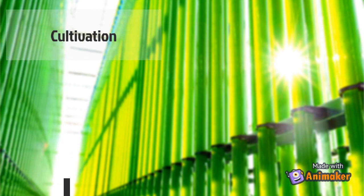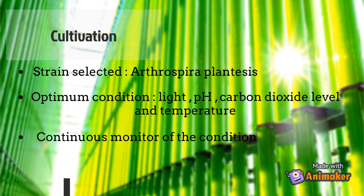For the cultivation stage, microalgae — selected strains of Arthrospira sp. — are cultivated in vertical column photobioreactors. Microalgae cultivation is controlled under optimal light intensity, pH, carbon dioxide level, and temperature. Hence, continuous monitoring of light intensity, temperature, and pH is necessary, using a lux meter probe, thermometer, and pH meter probe respectively.